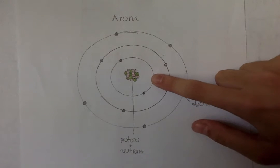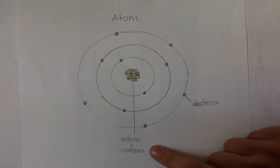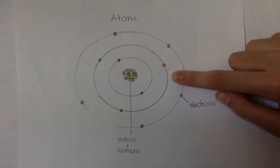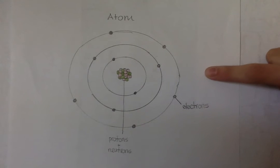The first energy level is closest to the nucleus, which consists of protons and neutrons. Then comes the second energy level, the third energy level, and there's a fourth energy level.